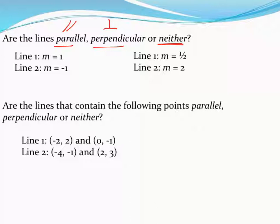I can see my slopes are 1 and negative 1, so they're not going to be parallel because they're not the same number. To be perpendicular, they need to be opposites, which they are. I have a positive and I have a negative, so that's good.